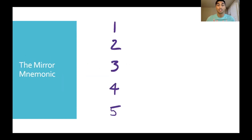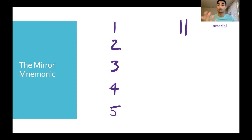Let's learn the mnemonic. We have the different classes one, two, three, four, five. Essentially what we're doing is creating a mirror image of the number. Starting with group one, we reflect it and it looks like an artery — you can see the two lines like the walls of the artery. This should help you remember that it's an arterial cause, with the vessels themselves driving the hypertension.